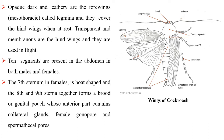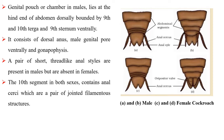Ten segments are present in the abdomen in both males and females. The seventh sternum in females is boat shaped and the eighth and ninth sterna together form a brood or genital pouch whose anterior part contains collateral glands, female gonopore and spermathecal pores. The genital pouch or chamber in males lies at the hind end of abdomen, dorsally bounded by the ninth and tenth terga and ninth sternum ventrally. It consists of a dorsal anus, male genital pore ventrally and gonopophyses.